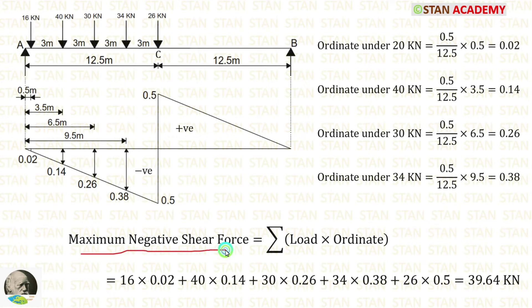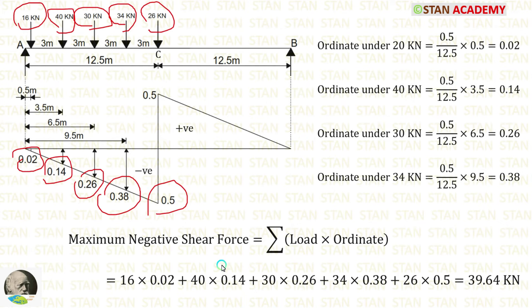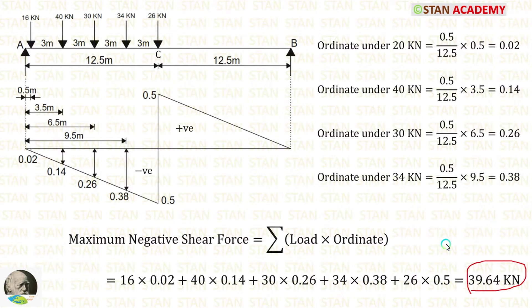Now we can calculate the maximum negative shear force, which is equal to summation of load times ordinate: 16 × 0.02, plus 40 × 0.14, plus 30 × 0.26, plus 34 × 0.38, plus 26 × 0.5. The maximum negative shear force is equal to 39.64 kN.